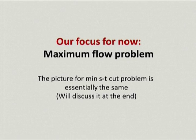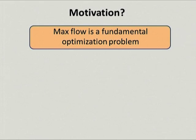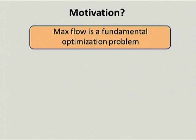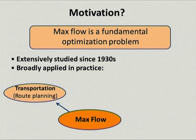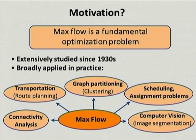Now we have our maximum flow problem—why do we care about it? The answer is that maximum flow is a fundamental optimization problem. Study of this problem started quite a while ago in the 1930s, and there is so much interest because it is broadly applied in practice. Just looking at the statement, you can see obvious applications to logistics and transportation, but there is also a host of sometimes quite non-trivial connections showing that progress on maximum flow automatically means progress on many other fronts—for instance, graph partitioning, scheduling, and computer vision.